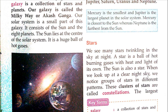Now we come to stars. We see many stars twinkling in the sky at night. A star is a ball of hot burning gases with heat and light of its own — jaise ki suraj ke paas apni khud ki light aur heat hai, waise hi saare stars mein khud ki light aur heat hoti hai. The sun is also a star. When we look at a clear night sky, we notice groups of stars in different patterns.